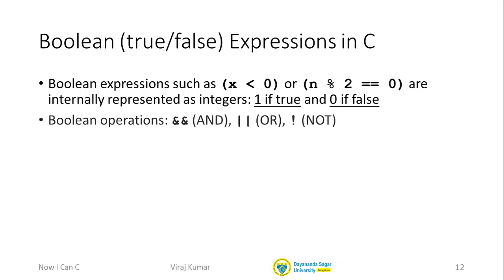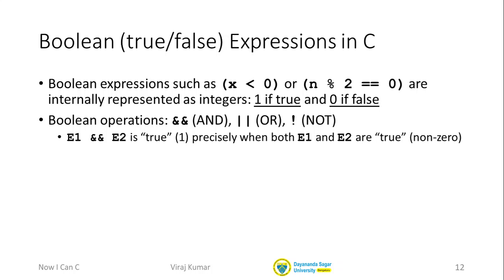There are three Boolean operators we will discuss: AND, represented as double ampersand (&&); OR, represented as double vertical bars (||); and NOT, represented as an exclamation mark (!). If I have two Boolean expressions e1 and e2 and I write e1 && e2, this expression is true — meaning it's 1 — precisely when both e1 and e2 are true.